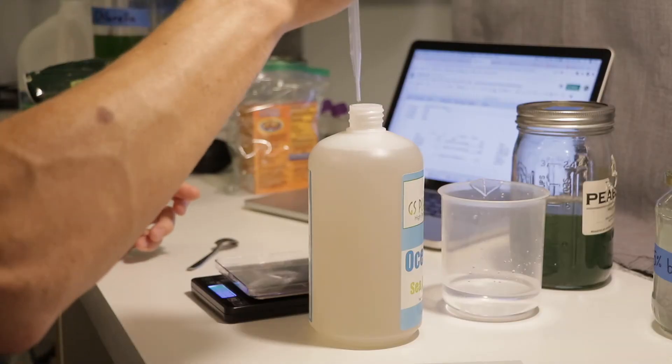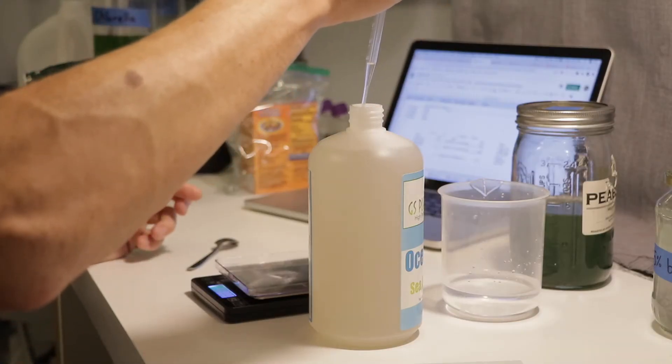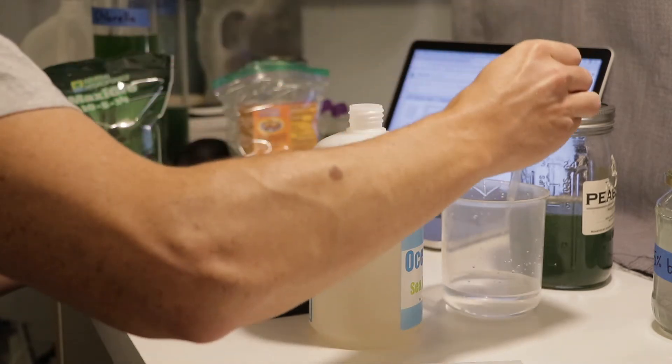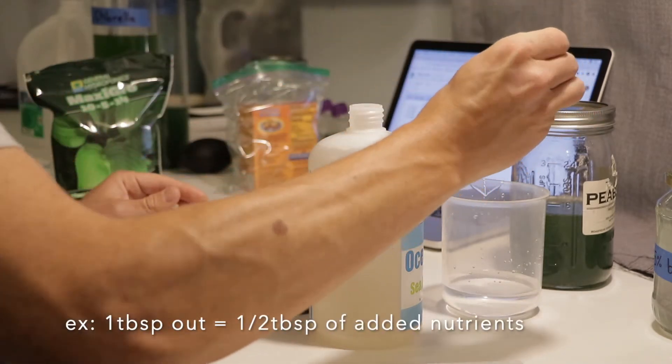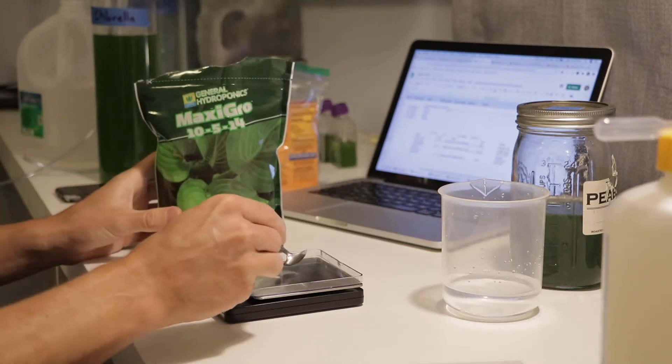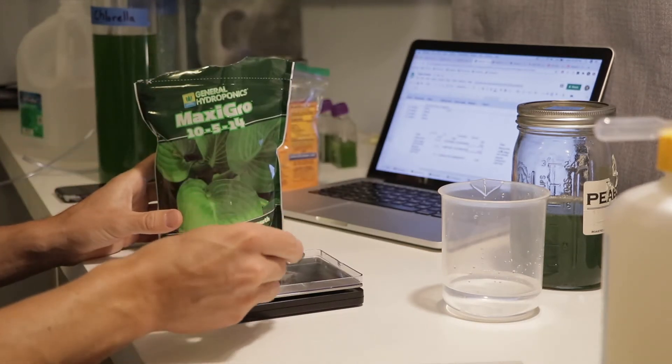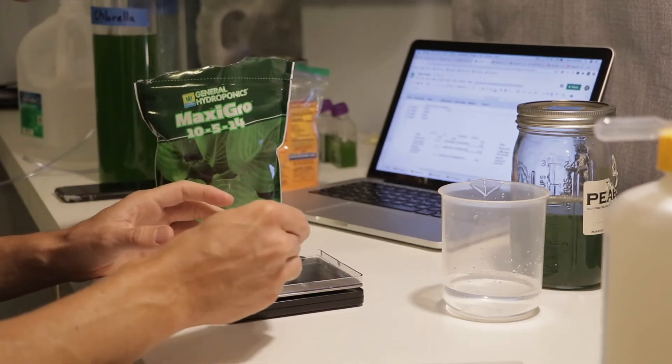Finally, after removing the dead spirulina, you should add half the weight of spirulina you took out in nutrients, similar to when you harvest spirulina. So keep the sodium bicarbonate out, but add some more macro and micronutrients.